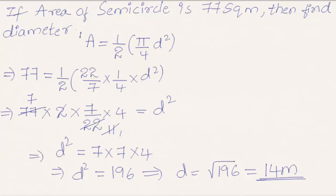In conclusion, the area of semicircle using diameter is given by the formula 1/2 × (π/4) × d².